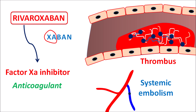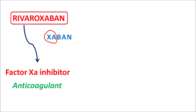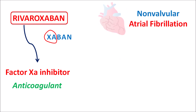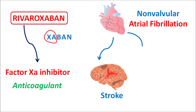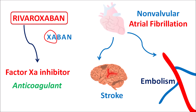So in these conditions rivaroxaban can be used to reduce embolism formation and reduce the risk of sudden stroke in patients. Particularly in patients with non-valvular atrial fibrillation, the heart is contracting at a high rate, which increases clot formation, resulting in stroke as well as systemic embolism. In such conditions rivaroxaban can be used to reduce clot formation, thereby reducing the risk of stroke and embolism.